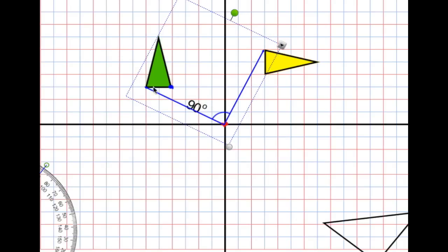But they line up, so this point on my green triangle is the same as the point on my yellow triangle. You can see the distances are the same.